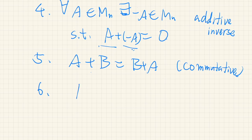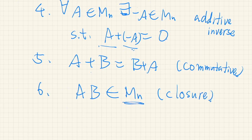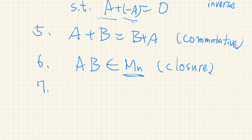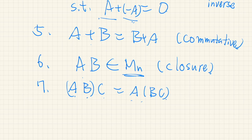Now considering multiplication: Property 6: AB is also an element of M_n — closure under matrix multiplication. Property 7: as we have shown above, matrix multiplication is associative — (AB)C equals A(BC). Note that in matrix multiplication, whether we multiply from the left or right matters, because multiplication is not always commutative, so the order is important.